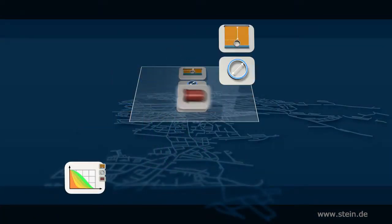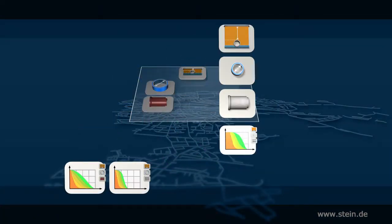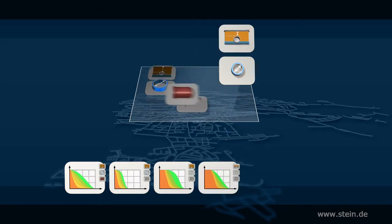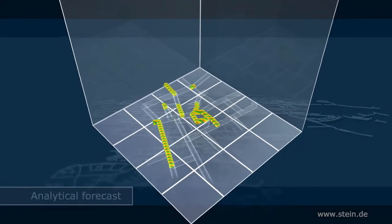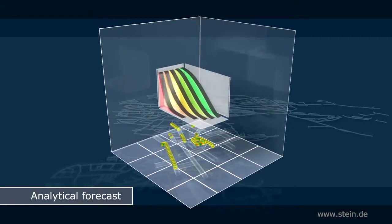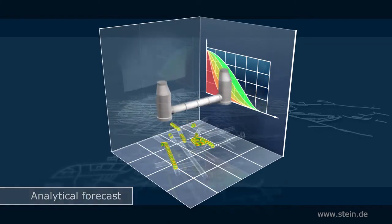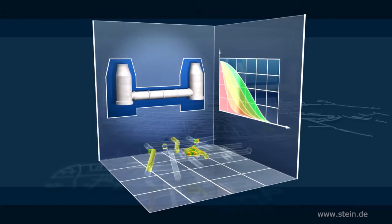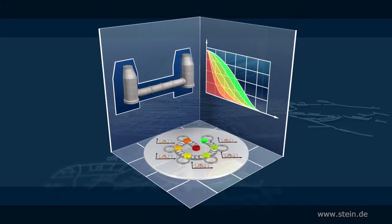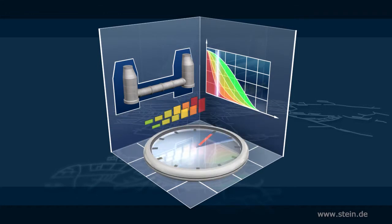This is done for all remaining clusters. Having determined the cluster-specific deterioration, Status is taking the next step and predicts the aging of single sections. The mathematical background for this is the model of Markov chains, which calculates the transition probabilities for condition and substance.